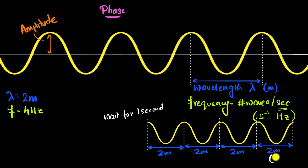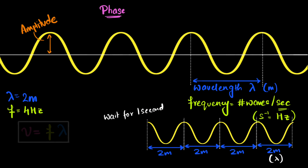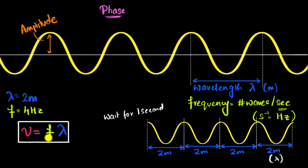That means the total distance traveled is f times lambda in one second, and therefore the speed of the wave would be f times lambda. Looking at this equation, we might think velocity depends on frequency and wavelength — but it's a bit more complicated; it depends on which kind of wave we are dealing with.